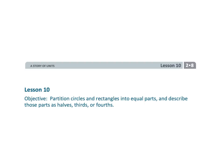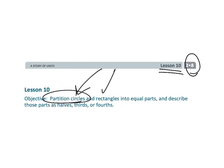And that wraps up second grade module 8 lesson 10. We're partitioning circles and rectangles. The key thing is to focus on those equal parts, and today we're really focusing on thirds and fourths.